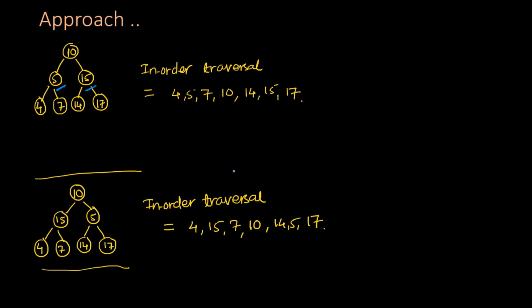In this array, if you compare elements at index i with elements at index i-1 for each value of i, you notice that the first element of the pair is always less than the second element, except in two cases: the pair (15, 7) and the pair (14, 5). If you identify these pairs and swap the first element of the first pair — that is 15 — with the second element of the second pair — that is 5 — you are able to recover the binary search tree.